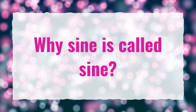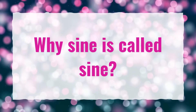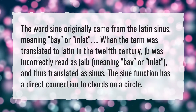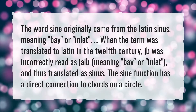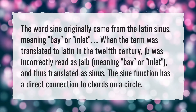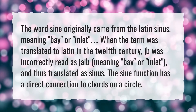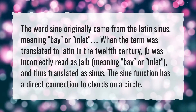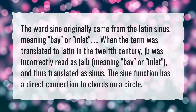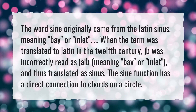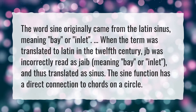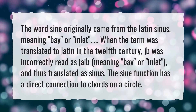Why is sine called sine? The word sine originally came from the Latin sinus, meaning bay or inlet. When the term was translated to Latin in the 12th century, the Arabic word jb was incorrectly read as jayb, meaning bay or inlet, and thus translated as sinus. The sine function has a direct connection to chords on a circle.